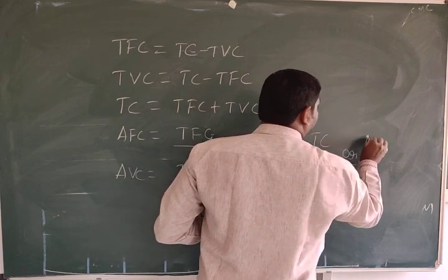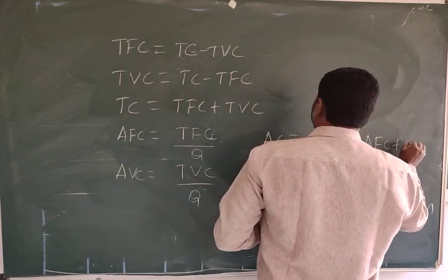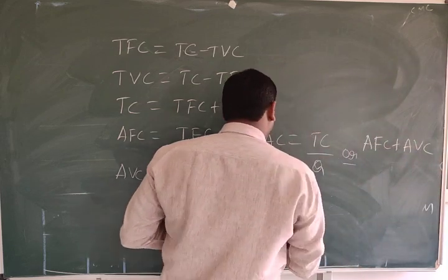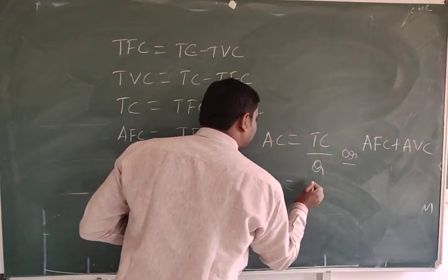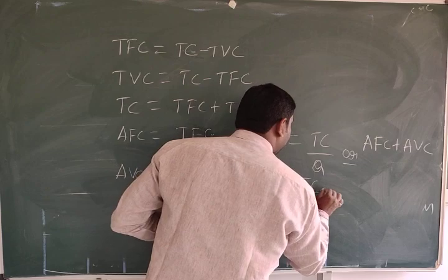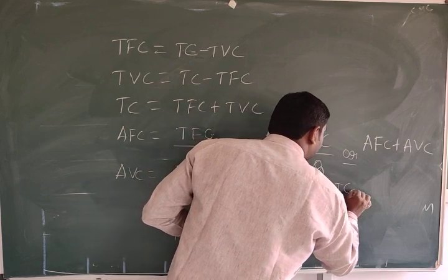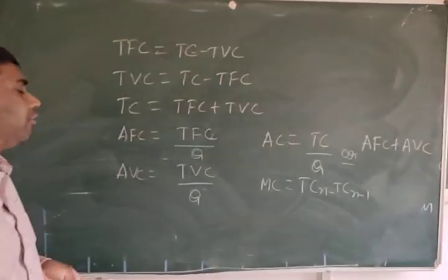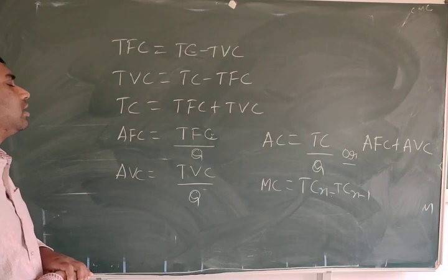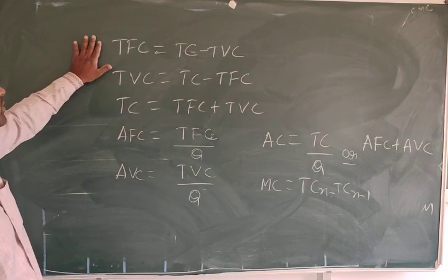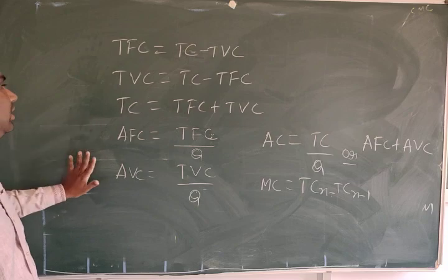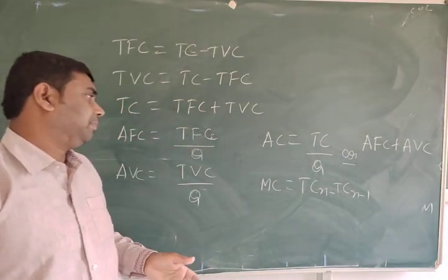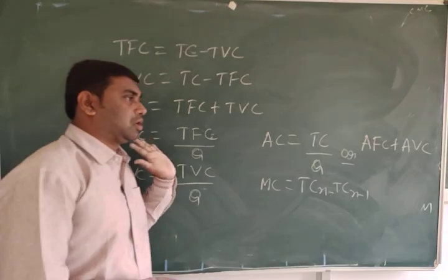AC equals AFC plus AVC. MC equals TC(n) minus TC(n−1). These are all the formulas to understand how to calculate TFC, AFC, TC, AVC, AC, and MC. Up to this is short-run cost.